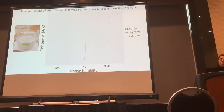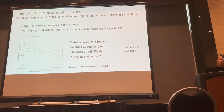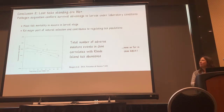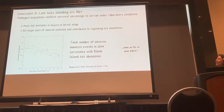Breaking it down by three humidity conditions: 75% humidity kills them pretty quickly, but even there you see a difference — the positive larvae live longer. Even under ideal conditions at 95% humidity, they live longer than their counterparts. Humidity is a big deal for ticks; they do not survive well under low humidity conditions. It's been a great year to be a tick because it's been raining all of June — the number of adverse moisture events in June is a big regulator of tick populations.